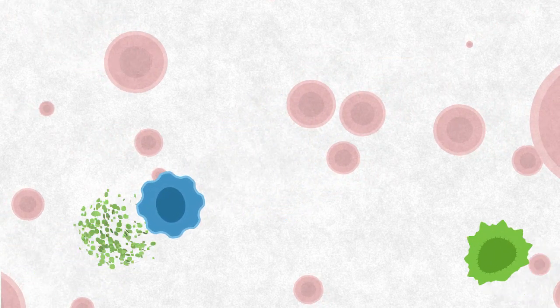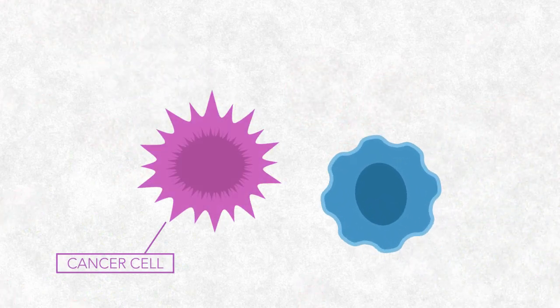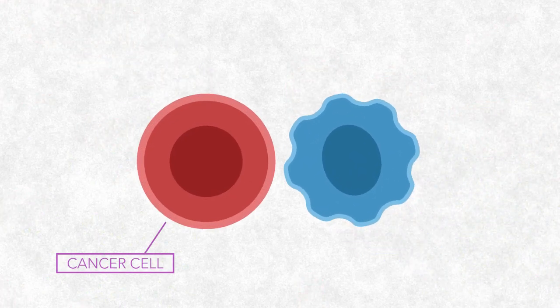T-cells cruise around the body, attacking diseased cells, but cancer cells can change in ways that make them hard for T-cells to recognize.